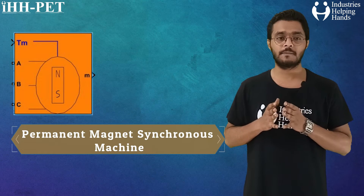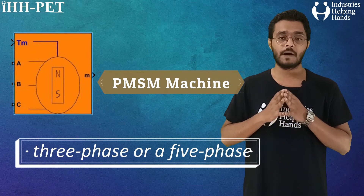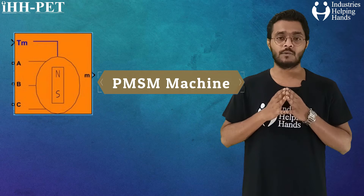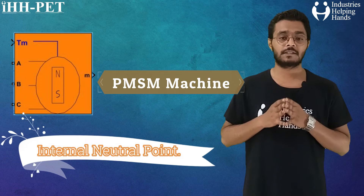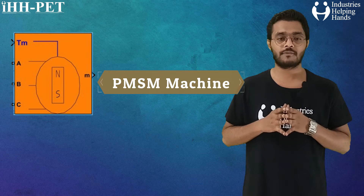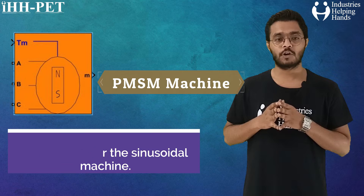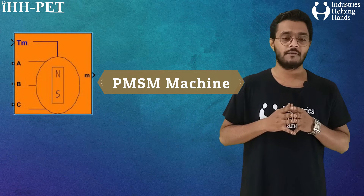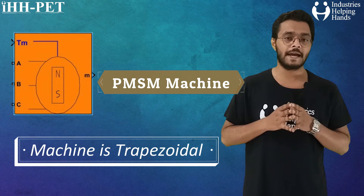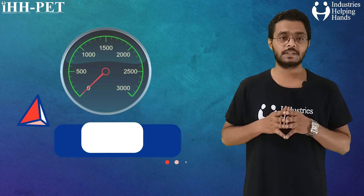We have used a permanent magnet synchronous machine block that implements a three-phase or five-phase permanent magnet synchronous machine. The stator windings are connected in Y to an internal neutral point. The three-phase machine can have sinusoidal or trapezoidal back EMF waveform. The rotor can be round or salient. For the sinusoidal machine it is round, and when the machine is trapezoidal, preset models are available.